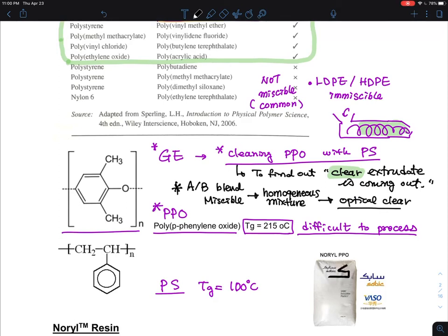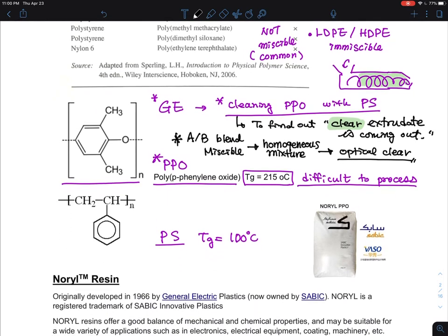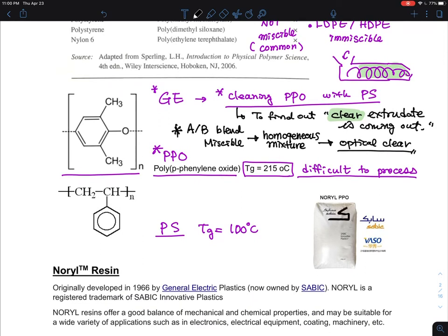So he found that usually when technicians try to clean the extruders by using cheap plastic such as polystyrene, he usually sees this very milky polymers are extruded because they are immiscible. But in this case, when you're trying to clean the PPO, clear plastics are coming out and he just started to think there's something unusual about this. And this essentially found out a new method that can make new kinds of polymers. And this is what people call NORYL resin.